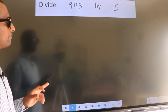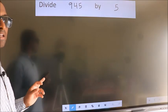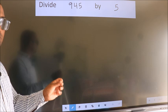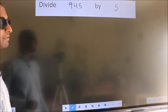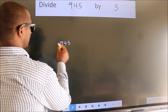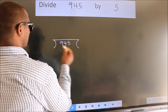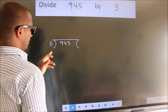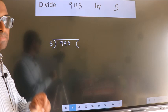Divide 945 by 5. To do this division, we should frame it in this way: 945 here, 5 here. This is your step 1.